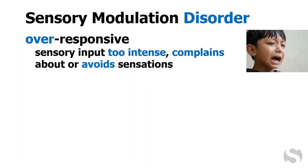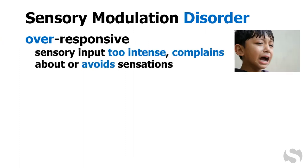Let's go deeper into each of these three types, starting with sensory modulation disorder, which actually takes three forms. Over-responsive individuals experience sensory information that is so intense that it overwhelms them. Noises may be too loud, tastes or smells too intense, textures or temperatures too uncomfortable. They may respond to this over-stimulation by avoiding sensations or by complaining and becoming irritable.